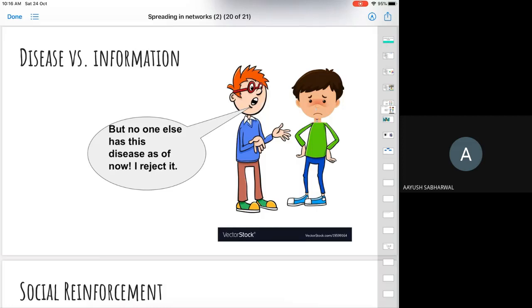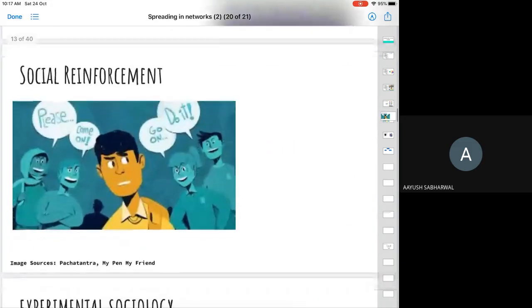Generally we put it this way: in the case of a disease, just one interaction with an infected individual is enough to infect you. However, in the case of an idea, information, or behavior, you need multiple hits. So you want multiple people to transmit that to you in order for you to accept it. And we name it as social reinforcement.